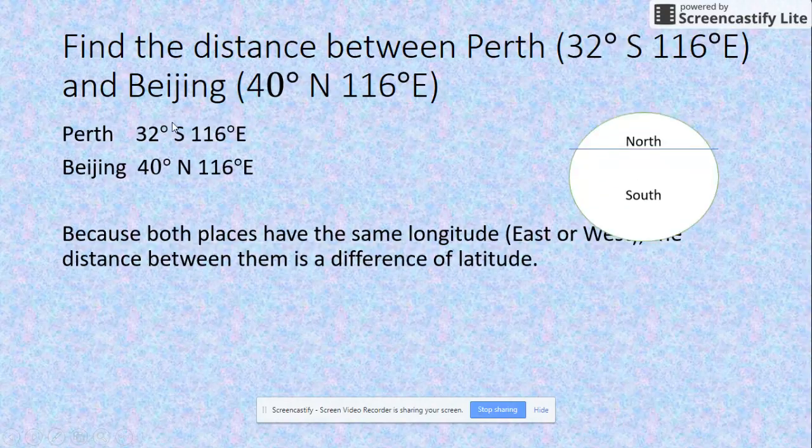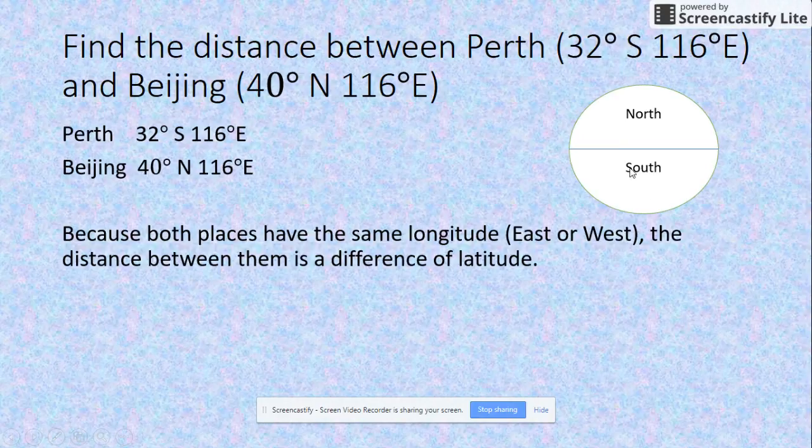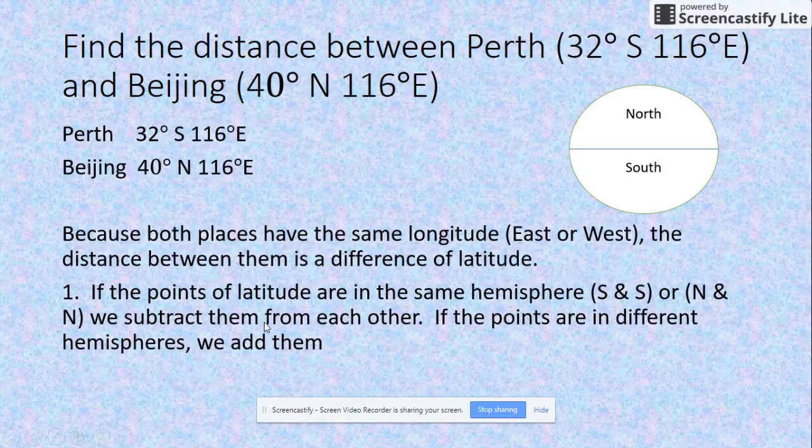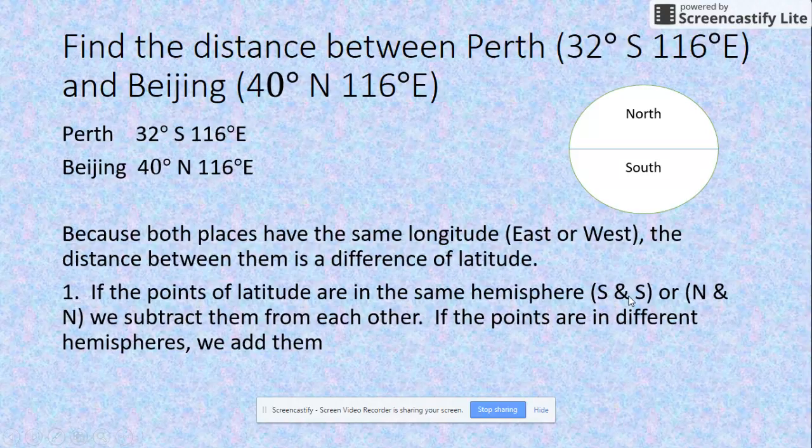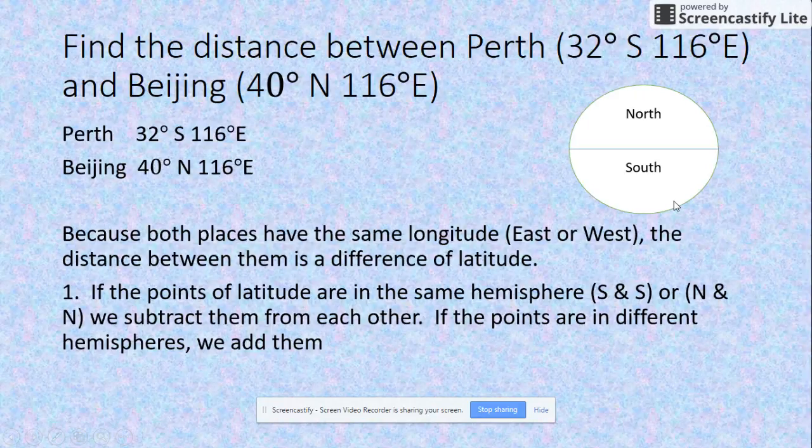If you have a look at a picture of the world, Perth is obviously in the southern hemisphere and Beijing is in the northern hemisphere. This is important to know because if the points of latitude are in the same hemisphere—south and south or north and north—you subtract the two numbers. If the points are in different hemispheres, you add them.